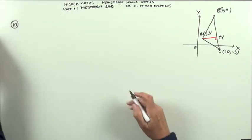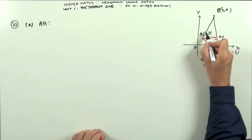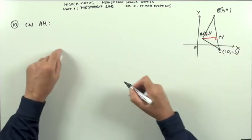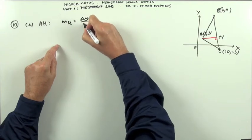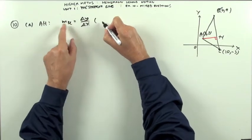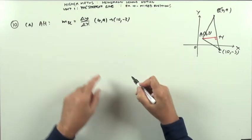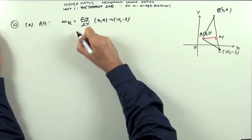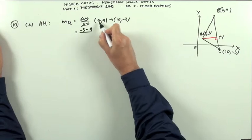For part A, I want AH. It's a line, so I need two things: a point on it — I've got that — and its gradient, which I get from BC. The gradient of BC is the difference in y over the difference in x. Going from B(4,9) to C(10,−3): the difference in y is −3 minus 9, and the difference in x is 10 minus 4.